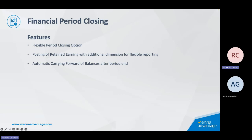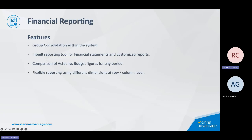We're going to be talking about how Vienna Advantage consolidates all of that information and allows you to report on any number of given combinations of those legal entities and how we can build up reporting structures within the platform. Next, we're going to be talking about closing off financial periods and the flexibility that Vienna Advantage gives you as a chief financial officer to be able to control which periods are opened, which periods are closed temporarily, which ones are closed permanently once we get to the year end process and we have audited accounts that have signed off. And then we're going to talk about the financial reporting elements.